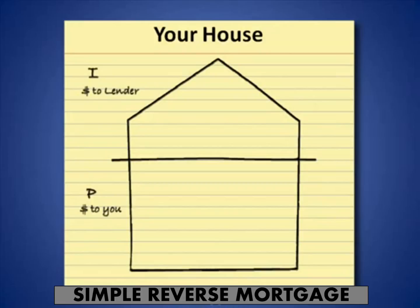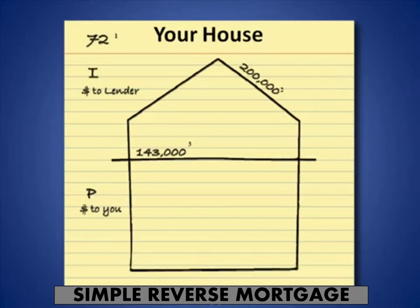With a reverse mortgage, the lender has to make money, so that portion is reserved for them for interest payments — not that they get it all, it's just reserved. For example, a 72-year-old with a $200,000 home: under the interest rate assumption I'm using, the portion available to you is $143,000. Everything above $143,000 would be reserved for interest for the lender.